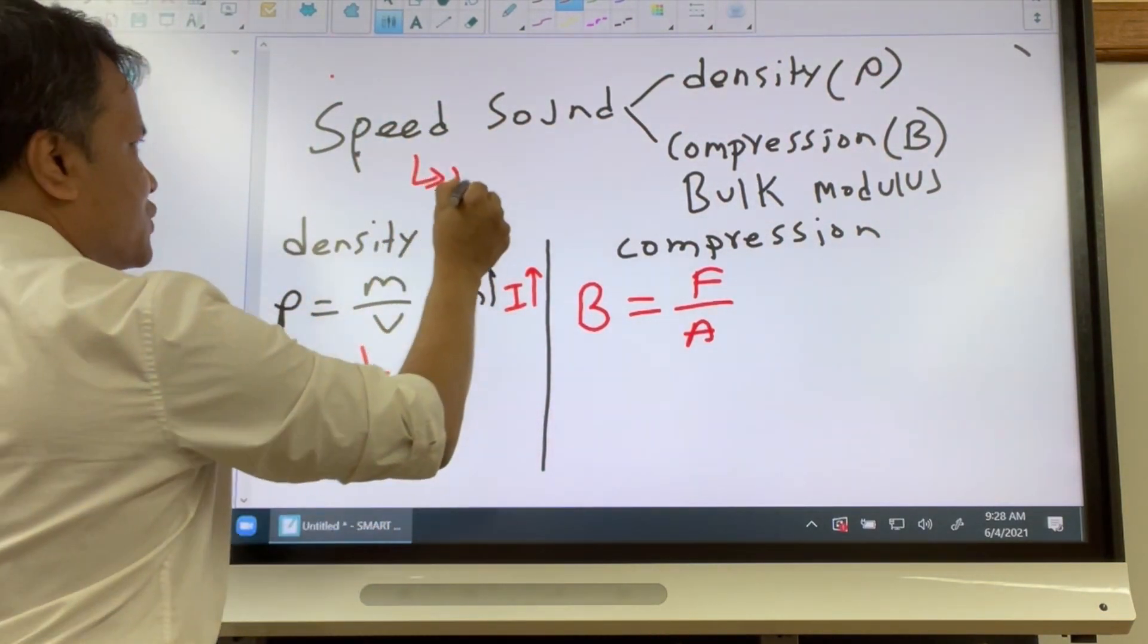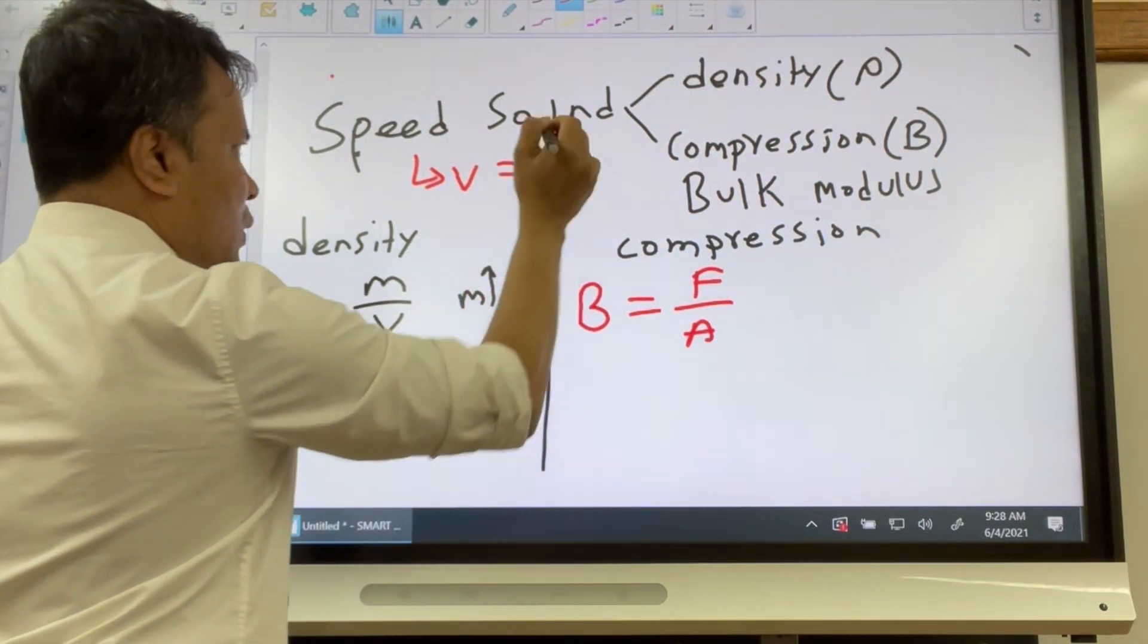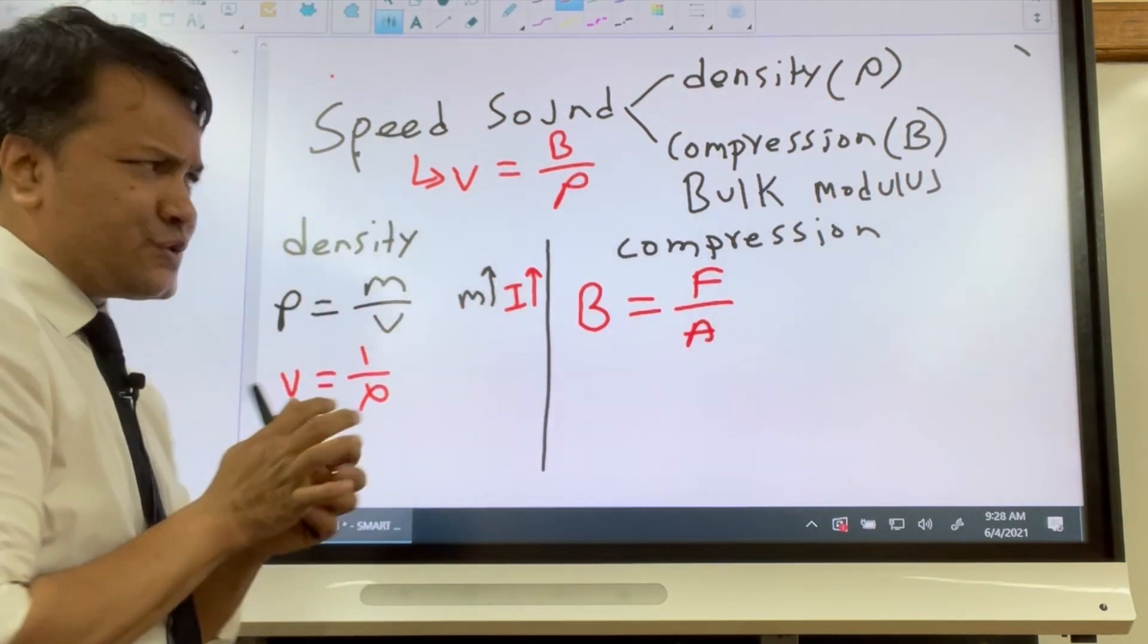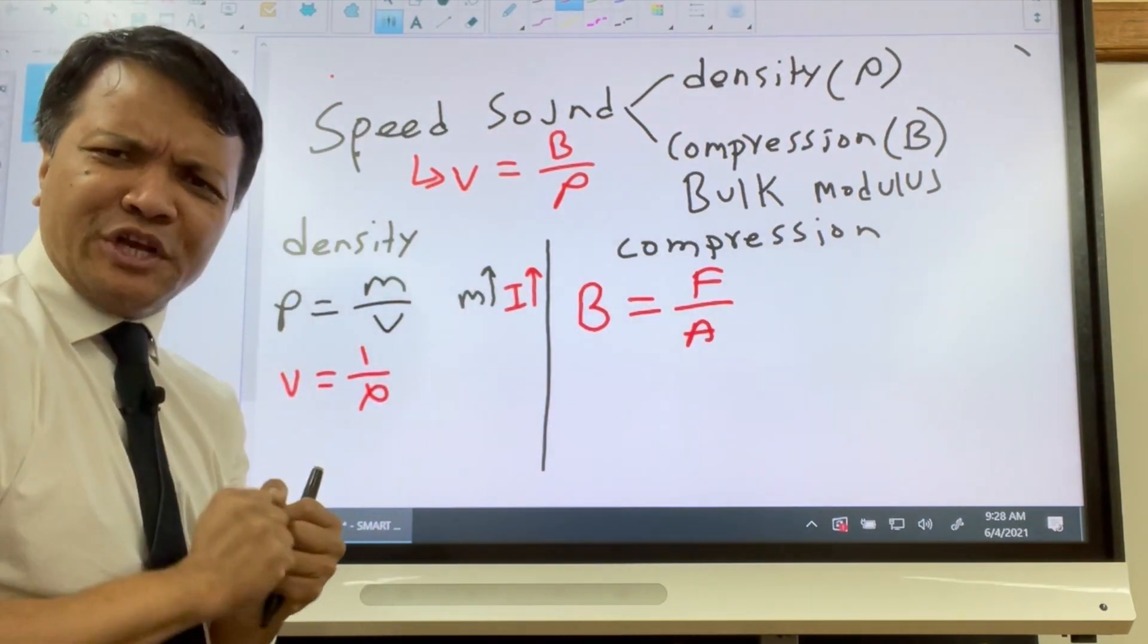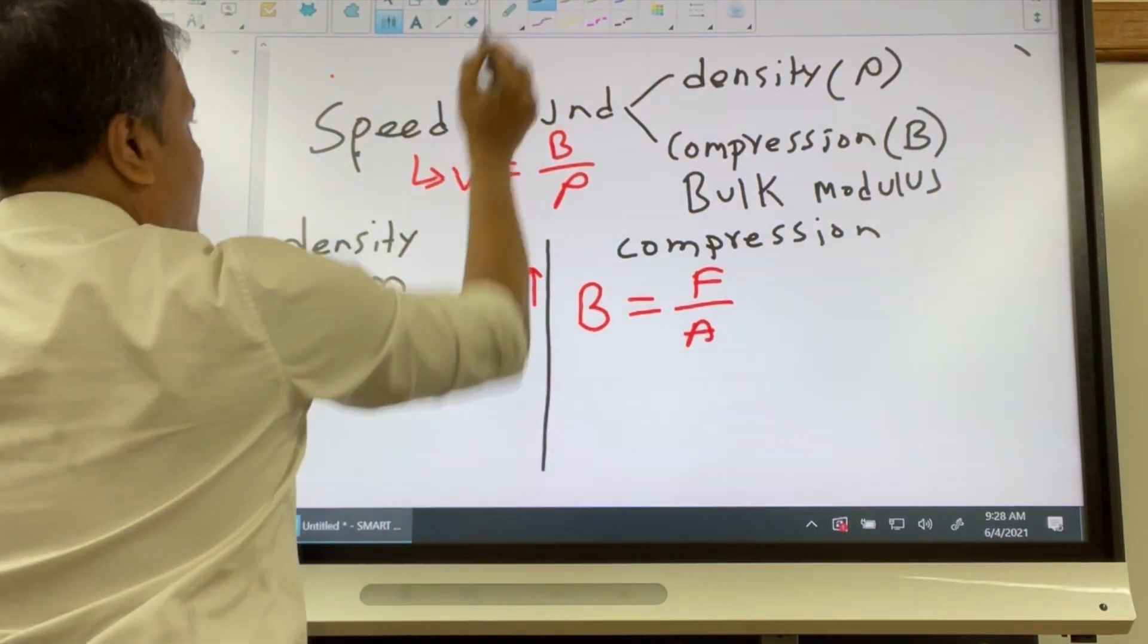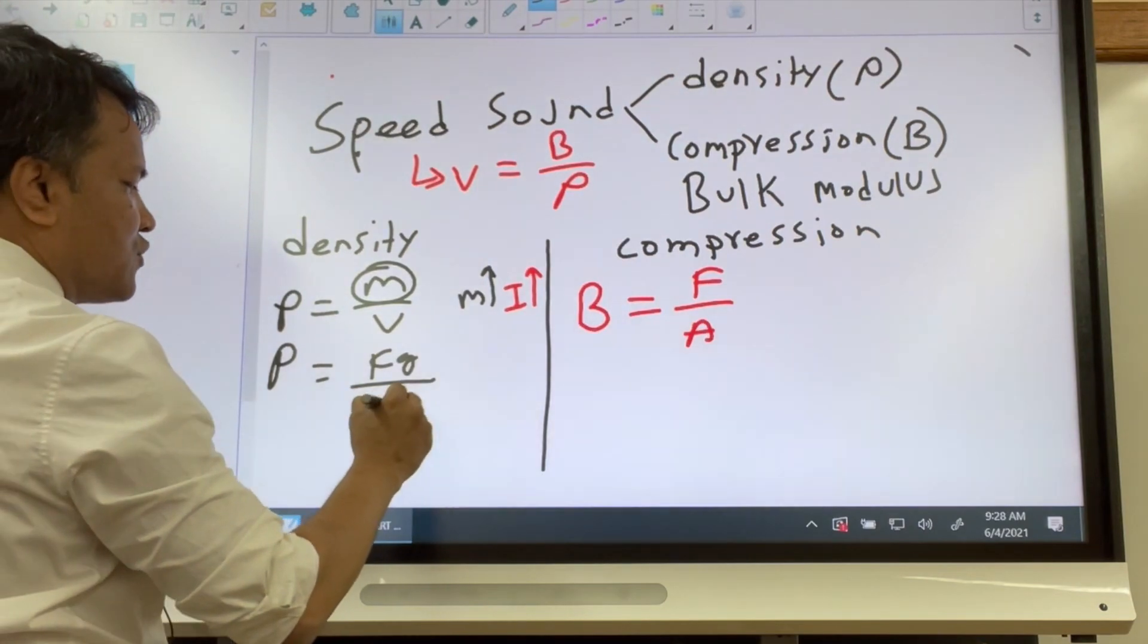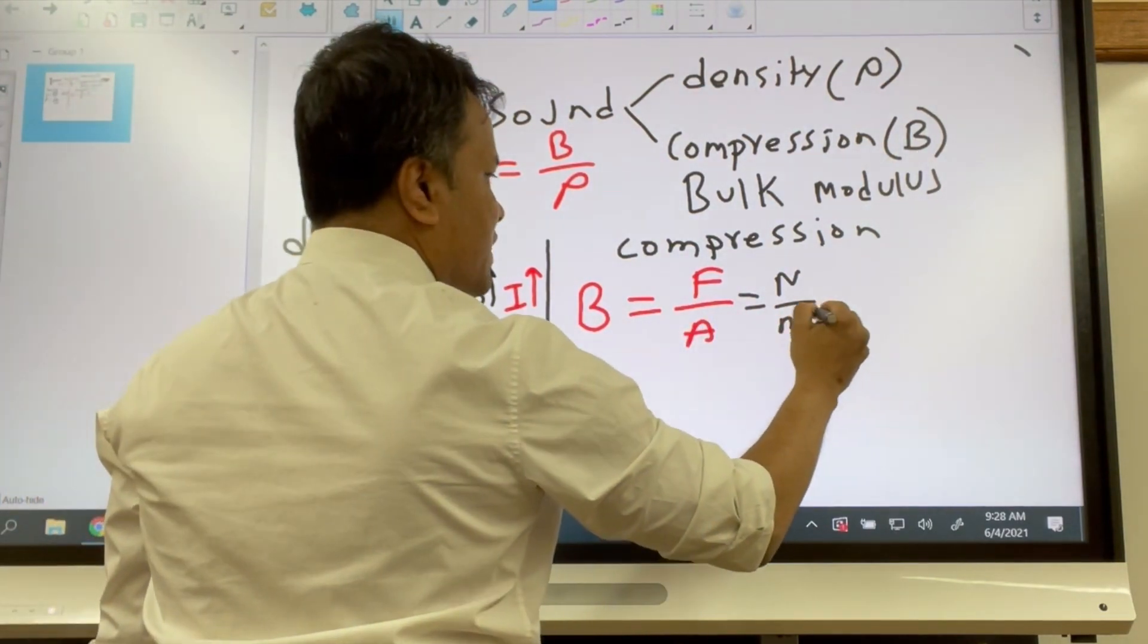Now we have to investigate by dimensional analysis whether we should add or whether we should modify this equation. So this is our basic equation. Now we're going to modify based on our dimensional analysis. Let's do the dimensional analysis. What is then the rho? Rho, the SI unit for mass is kilogram and SI unit for volume is cubic meter. SI unit for force is Newton. SI unit for area is of course square meter.